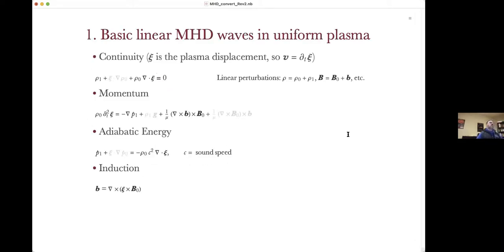Let's see where MHD waves come from mathematically. If we write down the continuity equation, the momentum equation, the adiabatic energy equation, and the induction equation — linearized — most of this talk is linear theory with just the end discussing non-linear waves. I've grayed out terms we won't account for in a uniform plasma: no gravity, a uniform background magnetic field B₀, no pressure gradient. Here I've introduced the sound speed C.